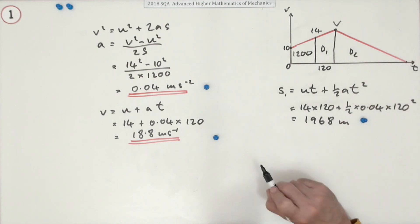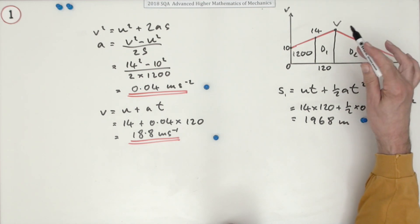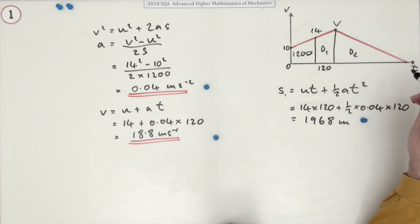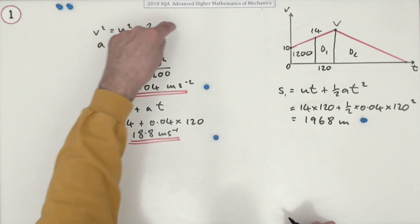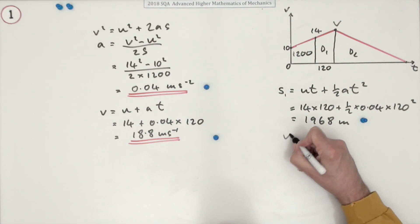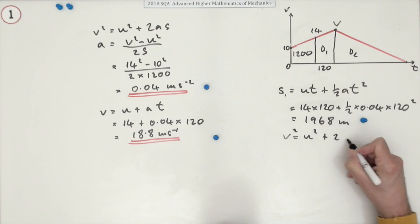Now for s2, what do we know there? We know the initial velocity, we know the final velocity, we know the acceleration. So we could use this one again on the rearrange to read it. I'll just write it down. v equals, oops, v squared equals u squared plus 2as.